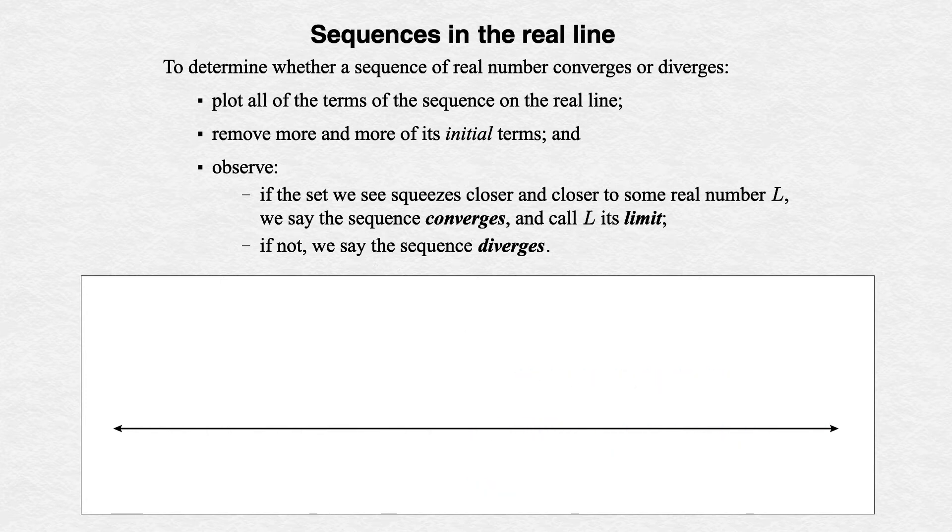There are ways to diverge other than getting big, though. For example, consider the sequence (-1)^n: -1, 1, -1, 1, -1, 1, etc. No matter how many initial terms we remove, we see the same picture forever, the numbers -1 and 1. But this doesn't squeeze toward one real number either, so this sequence also diverges.